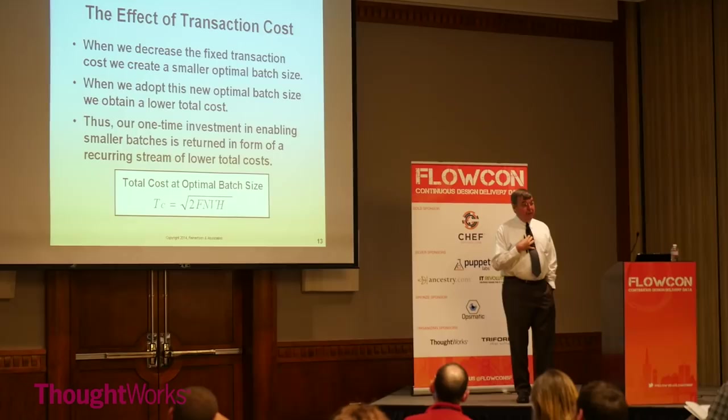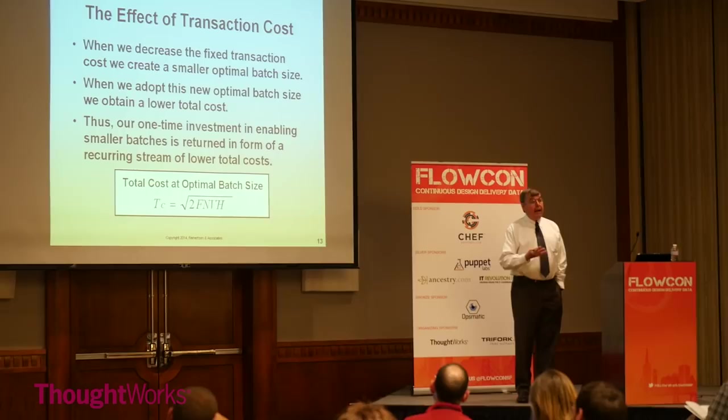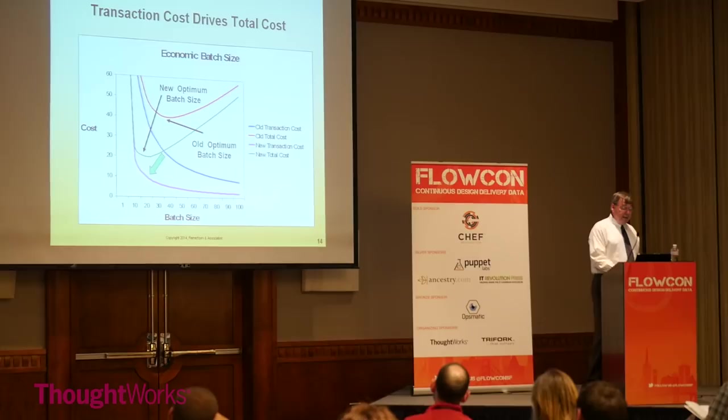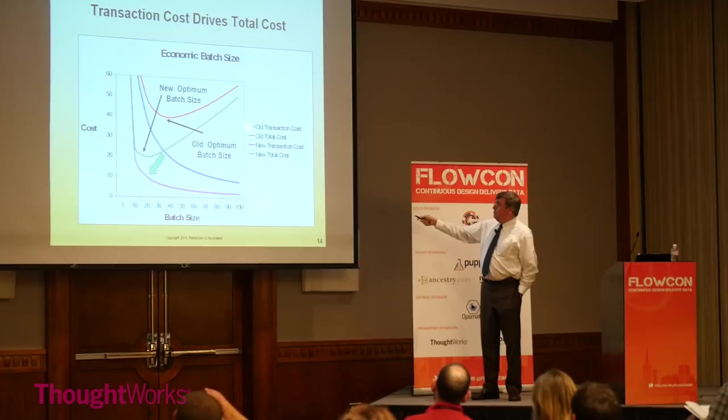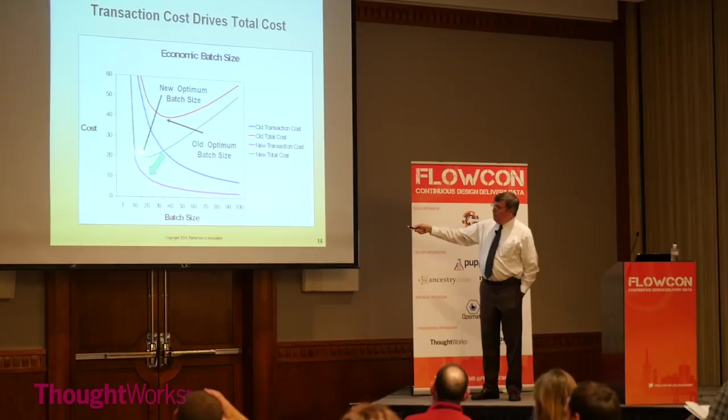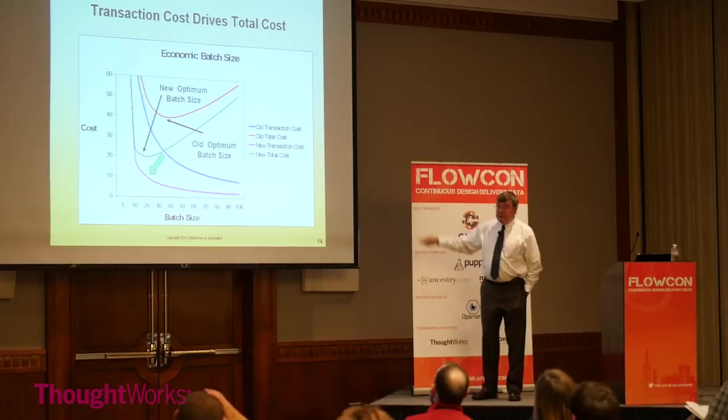You can reach the same conclusion with math as you can with faith — that reducing batch size ends up paying for itself if you understand the economics. Graphing two different transaction costs — the blue being the old one, the magenta the new one — you shift down the transaction cost curve. What happens to the total cost curve: first, the minimum moves to the left, enabling a smaller batch size. Second, the minimum shifts downward — you make more money when you have smaller batch sizes in the process.